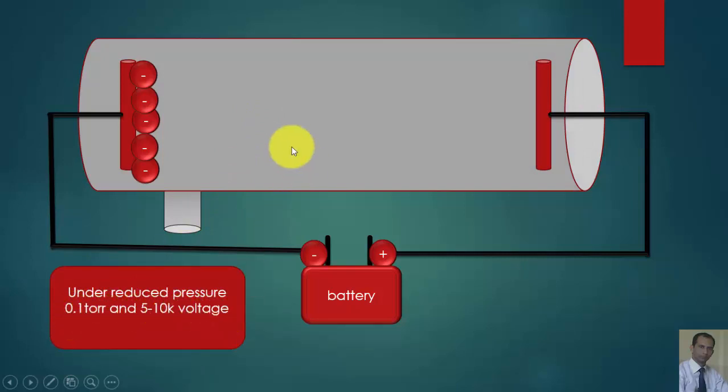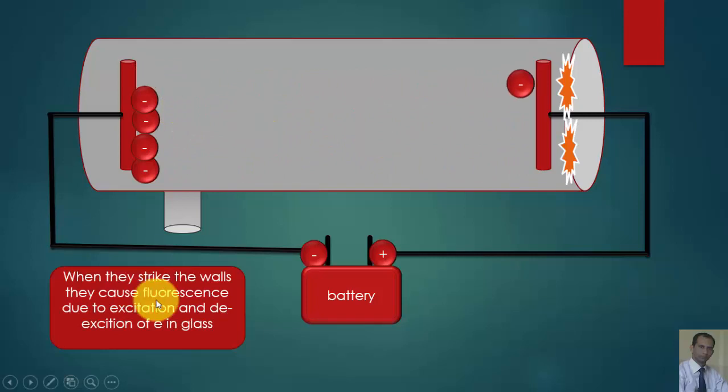This is what we observed: some cathode rays are moving from this cathode side towards anode side. This was what was observed inside this discharge tube.